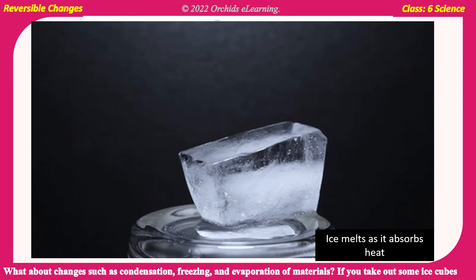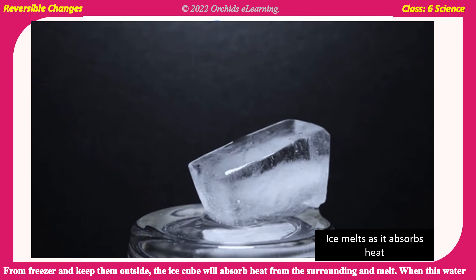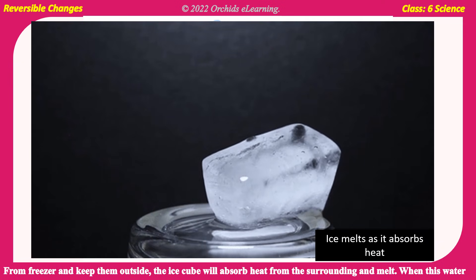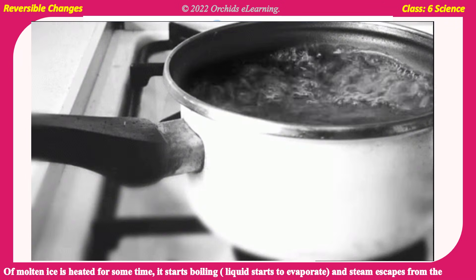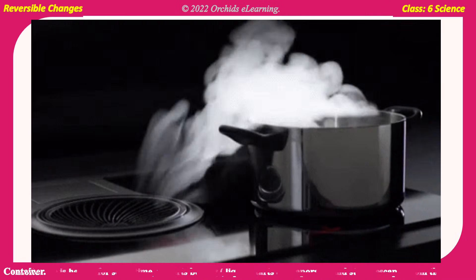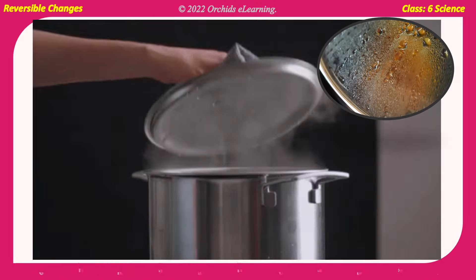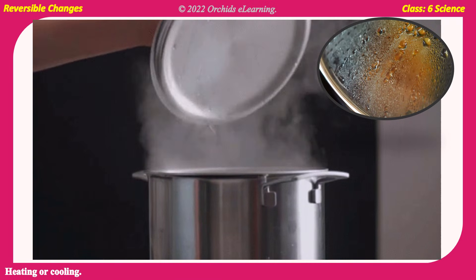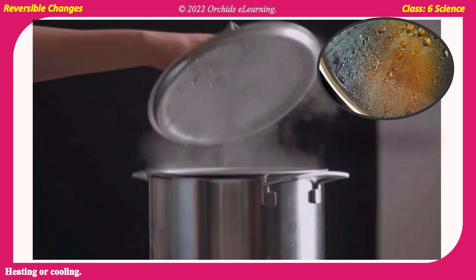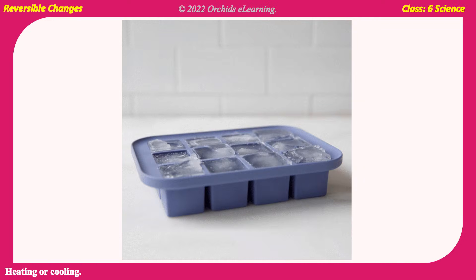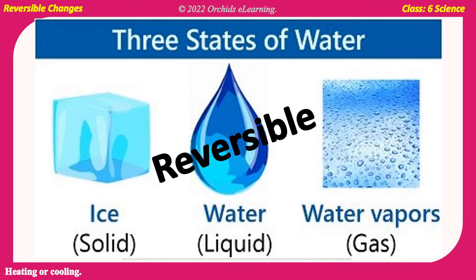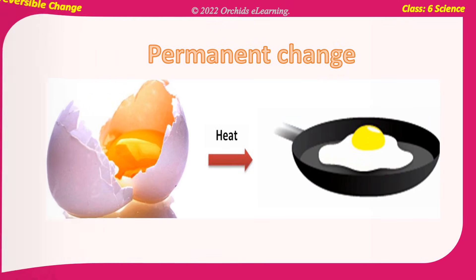If you take out some ice cubes from the freezer and keep them outside, the ice cube will absorb heat from the surroundings and melt. When this water of molten ice is heated for some time, it starts boiling. Liquid starts to evaporate and steam escapes from the container. If you hold a lid over the container, the steam will again liquefy or condense into small droplets of water on coming in contact with the cold lid. This water can be cooled down further and kept in the freezer to form ice again. Thus, the three physical states of water are reversible and can be changed from one state to another by heating or cooling.